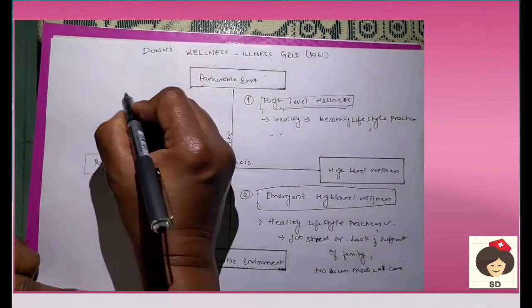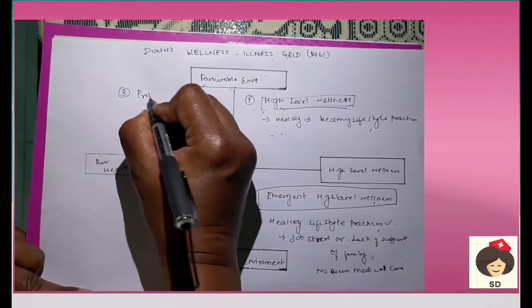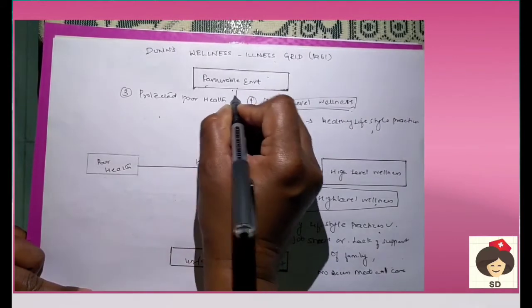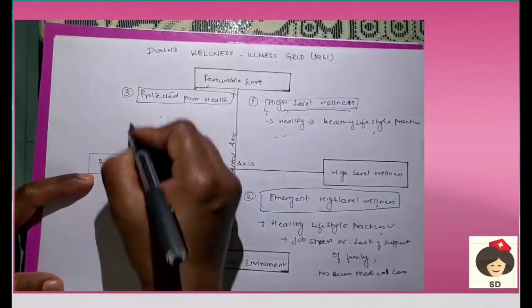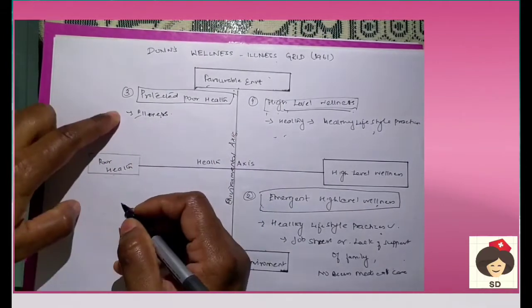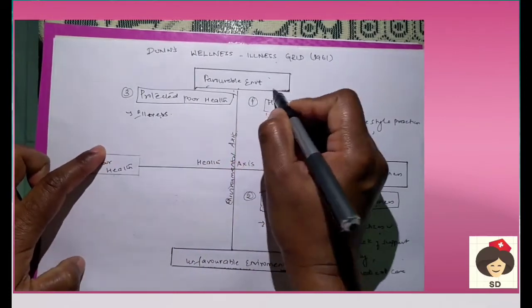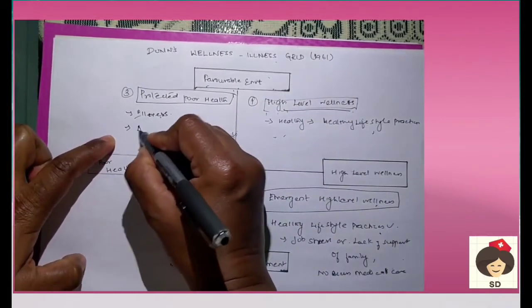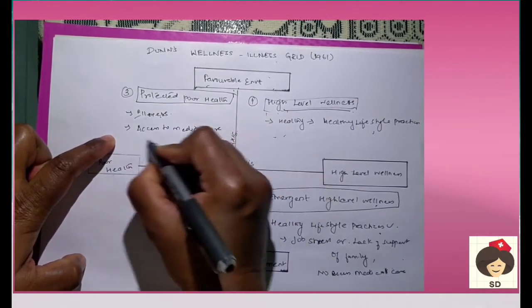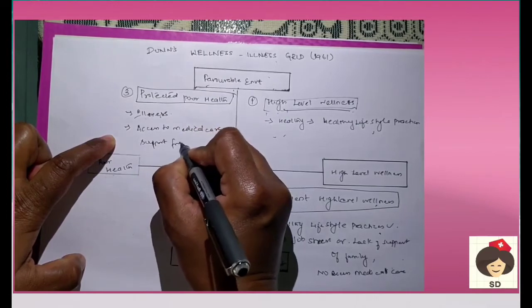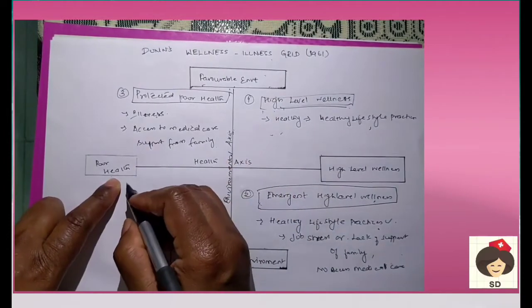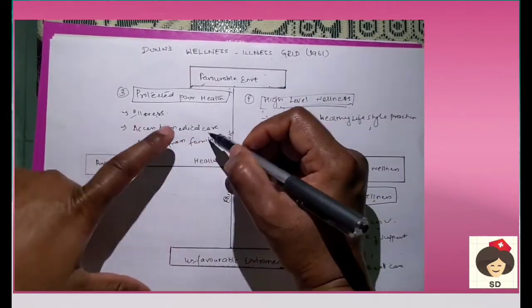The next quadrant is protected poor health. In this quadrant, the person is already ill, but he has a favorable environment — that means he has access to medical care and support from family members. When the person is in a favorable environment but has poor health, then he is protected because the environment is good.